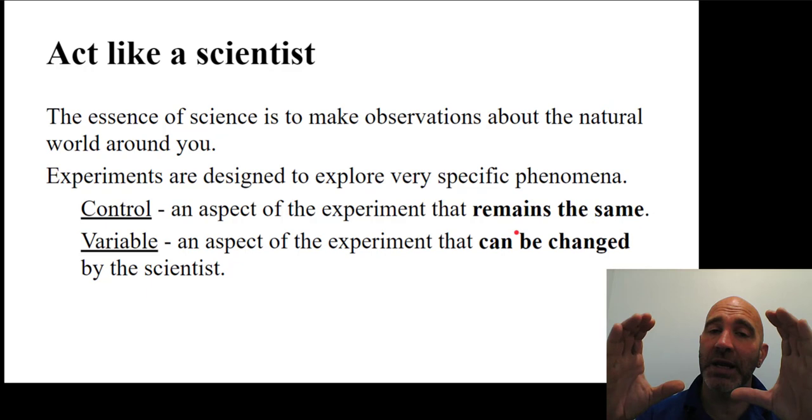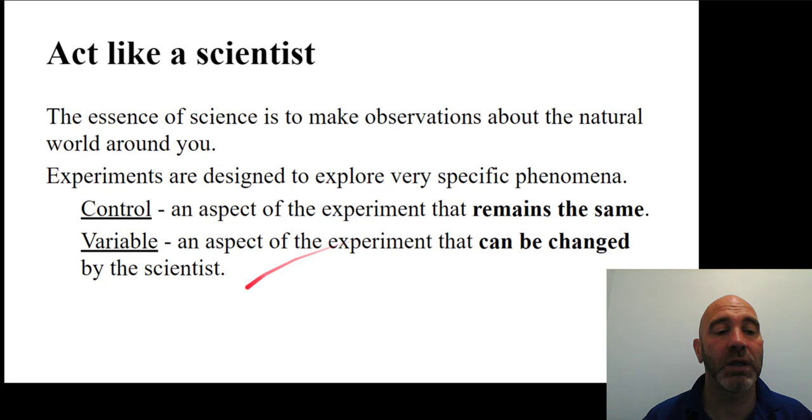And we keep as many things the same as we possibly can, but we change one. And we call this the variable. This is an aspect of the experiment that can be changed by the scientist so that they can make some observations based on that change.